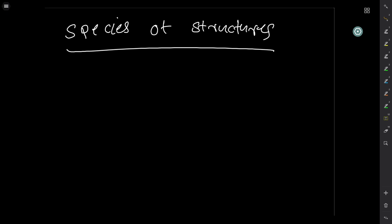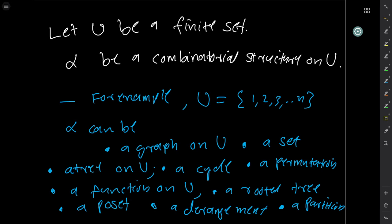We are going to start today the topic on Species of Combinatorial Structures. A combinatorial structure is basically any kind of construction that you make on a set.